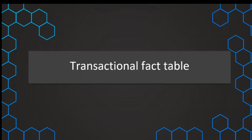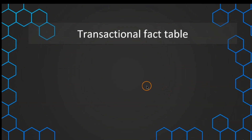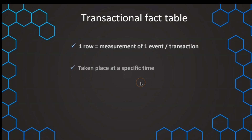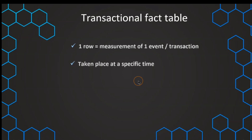The most fundamental fact table is the transactional fact table. In this transactional fact table, we have one row that is defined by one event or one transaction. So the facts in this transactional fact table are just measurements of one event or one transaction — something that takes place at one specific time and at a specific place.